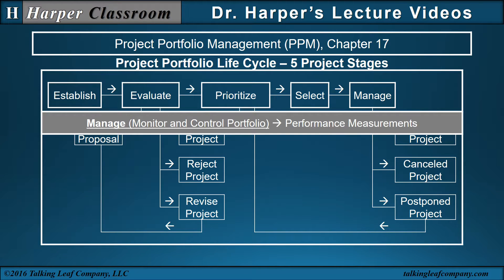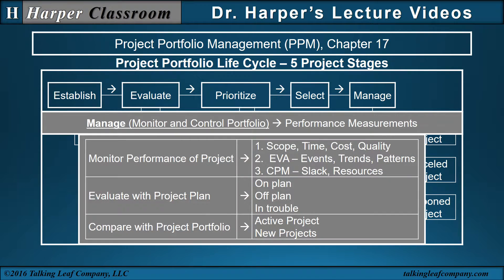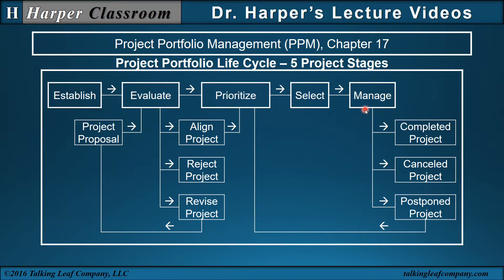Manage. Monitor and control the portfolio. Here's where we have performance measurements. We start with monitoring the performance of a project, looking at scope, time, cost, quality, and EVA analysis. We have events and the trends of the schedule performance index and cost performance index. The critical path method with the slack and resource allocations. Then we look at whether the project plan is on plan, off plan, or in trouble. Then we compare active projects with new projects within the project portfolio. The output of the manage stage is a completed project, a canceled project, or a postponed project, which goes back to the prioritize stage, where the postponed projects are prioritized with the aligned projects for input into the select stage.